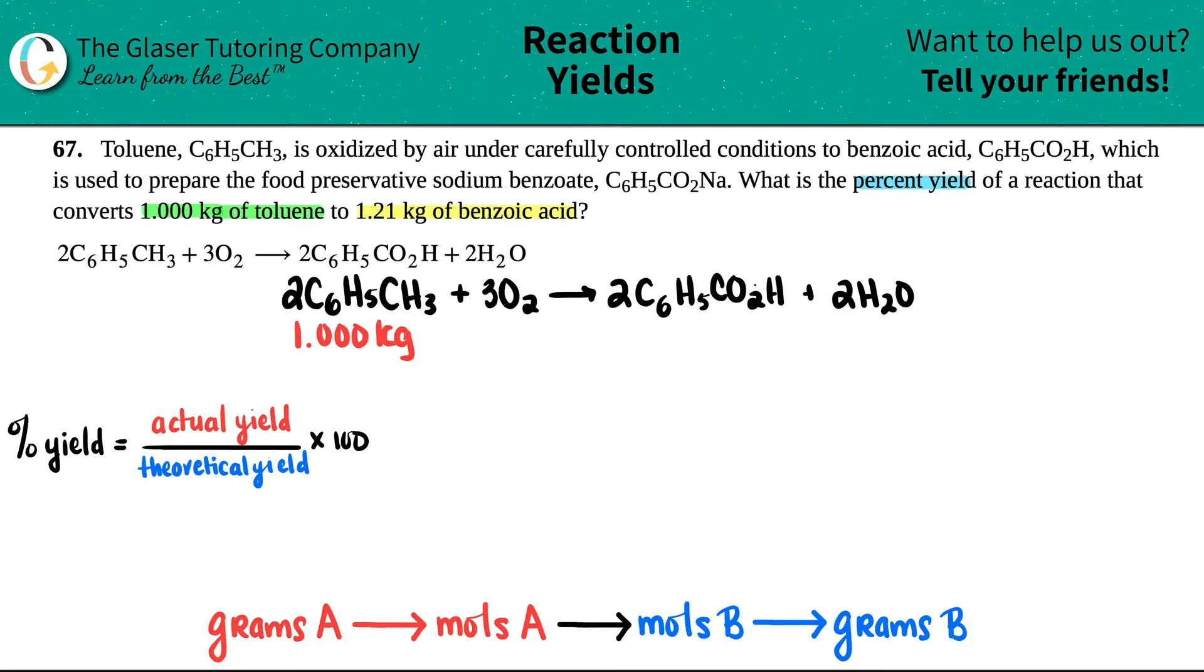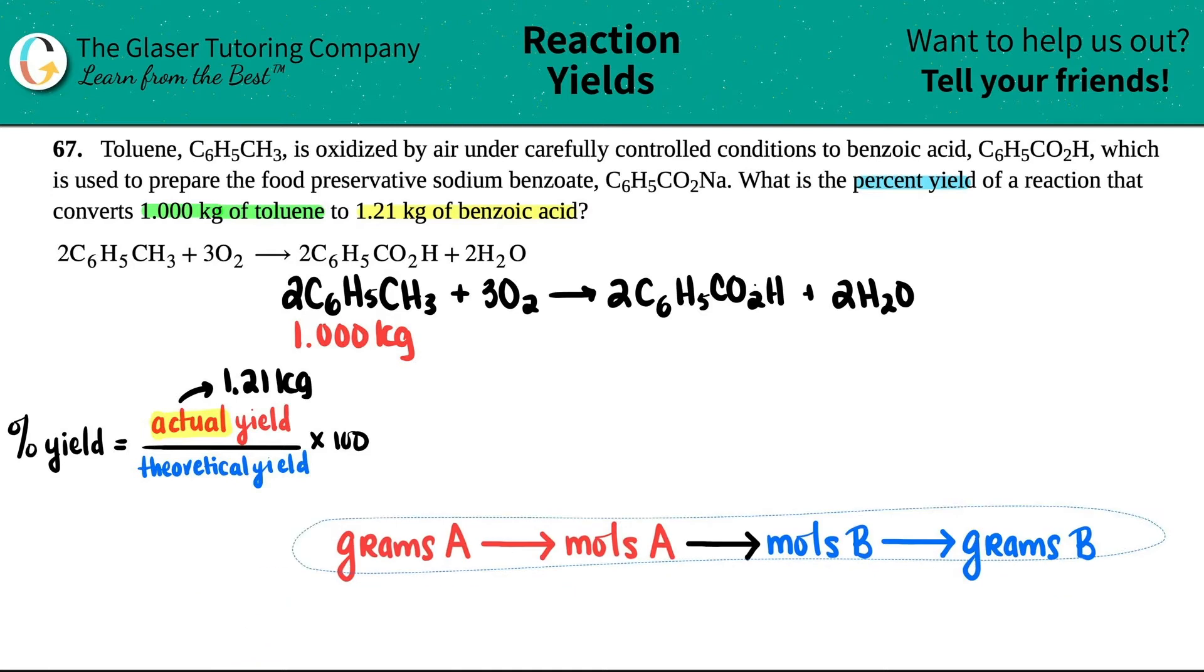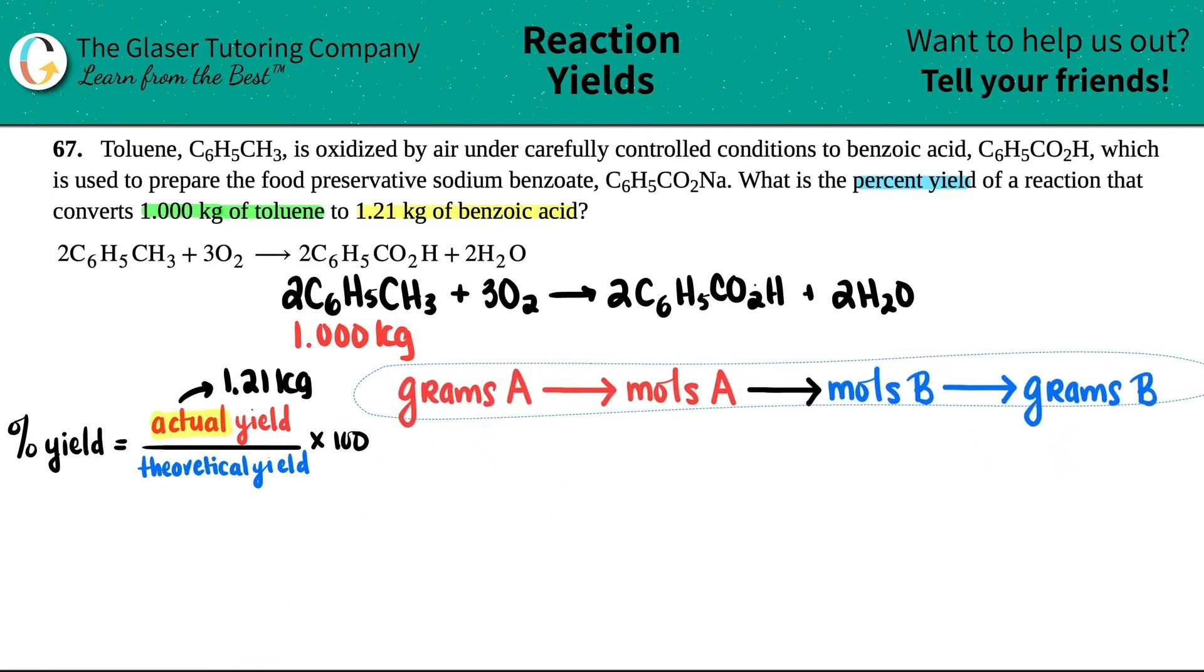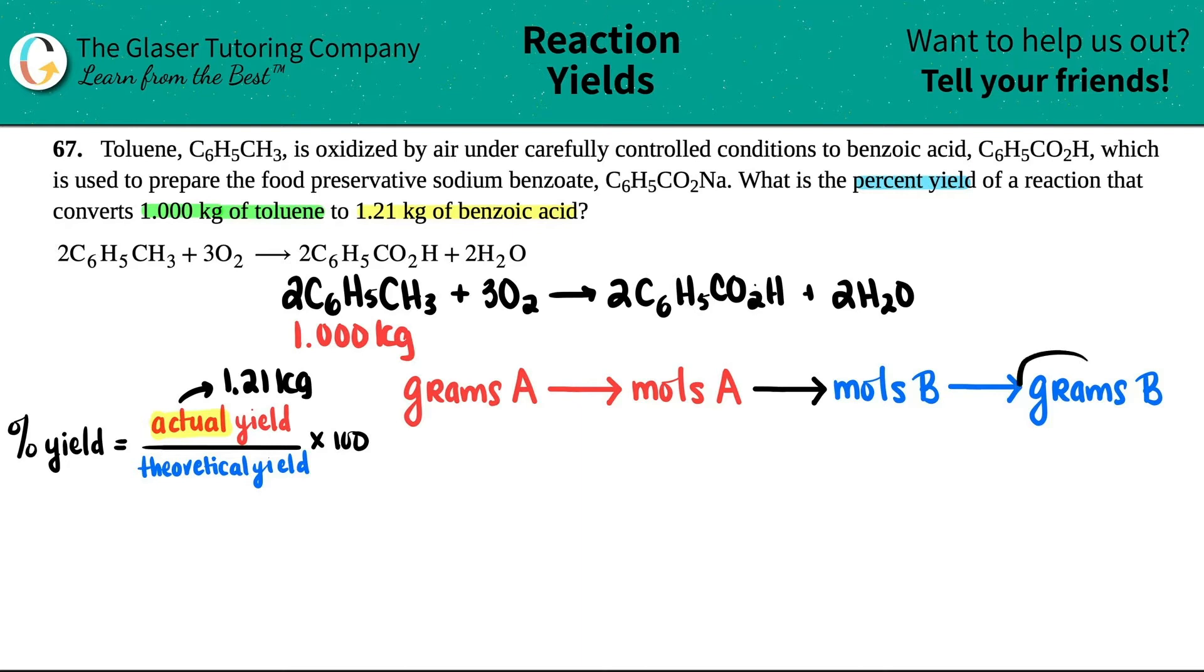And in an actual experiment, this scientist converted one kilogram to 1.21 kilograms. Now, when we're doing a percent yield, which is this formula right here, maybe I'll put this on the side. Percent yield is all about an actual yield versus a theoretical yield.